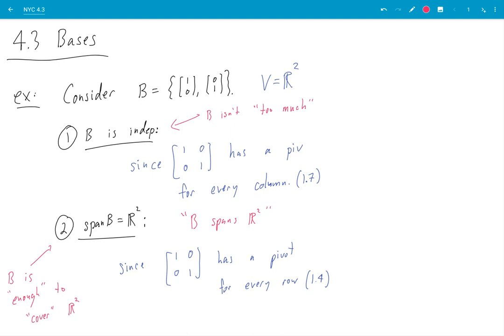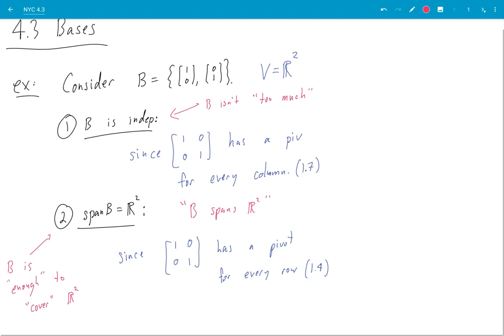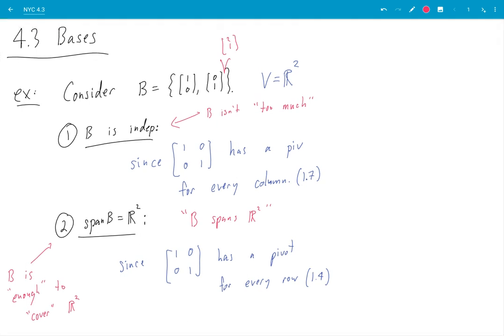What I mean by that is that there isn't any extra vector in here. I think you agree that if I were to insert another vector, say [2,1], that would be, in some sense, extra. I don't need it. I don't need this [2,1]. I don't need it to have the span of B equal R². So that's how I think about it.